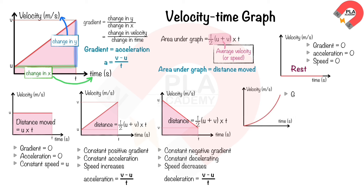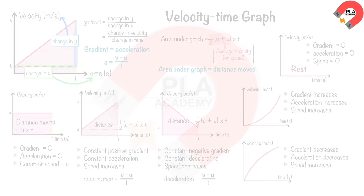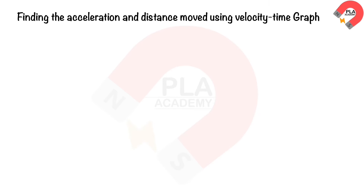A curved graph with an increasing gradient indicates increasing acceleration and increasing speed. A curved graph with a decreasing gradient indicates decreasing acceleration but the object is still moving at increasing speed.